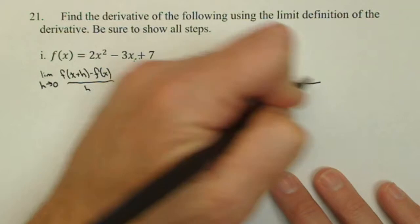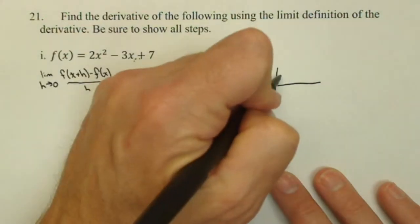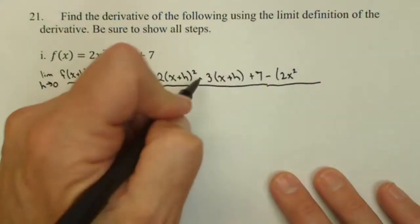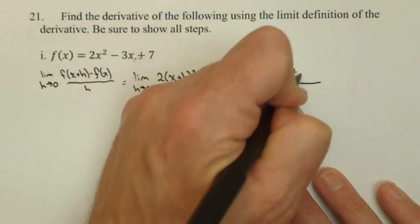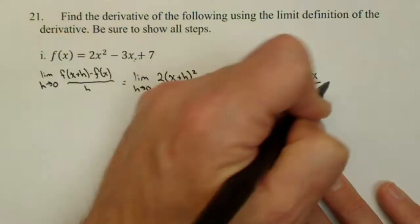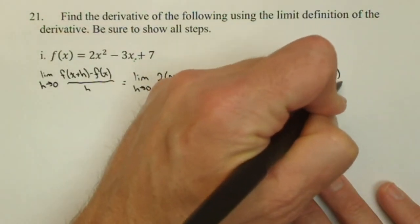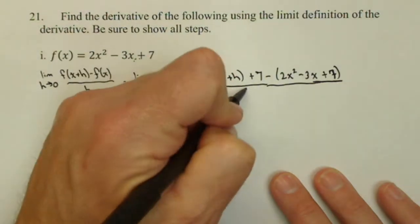minus f of x. So, minus our original, and I like to put that in parentheses so that I remember to distribute my minus sign here, 2x squared minus 3x plus 7 all over h.